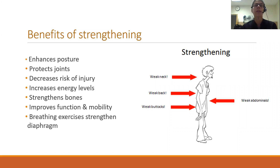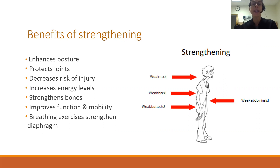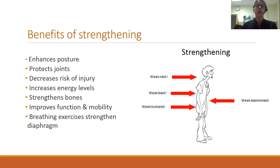Strengthening is important: stronger core abdominals, back extensors, and buttock muscles lead to better posture. It helps to protect joints and reduce risk of injury, can increase energy levels, strengthen bone mineral density, and improve function and mobility. Focusing on breathing exercises also helps to strengthen the diaphragm. The muscles we tend to focus on in AS patients — those that are commonly weak — are the abdominals, buttocks, back extensors, and neck extensors.